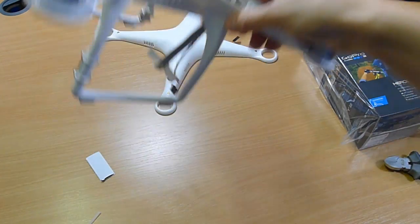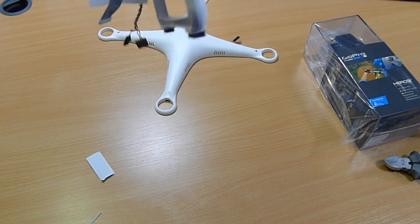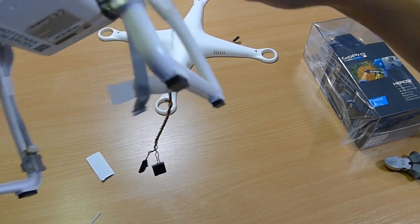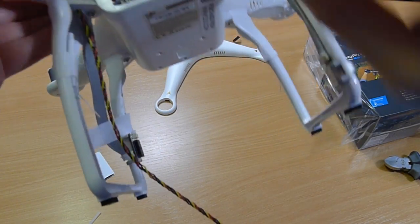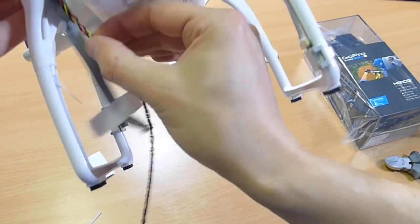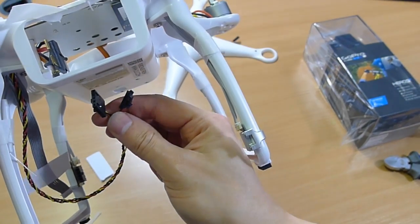Okay. So now you'll see, at the bottom of my Phantom 2, I now have, get the right angle, I now have my video cable, ready to go to my FatShark transmitter,